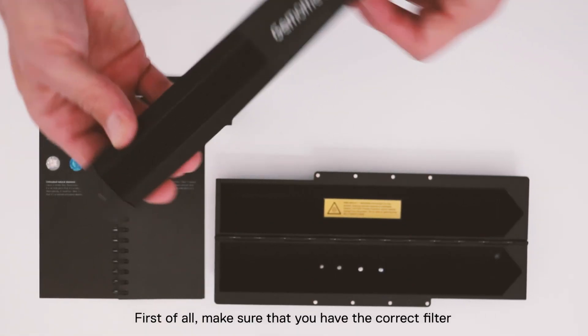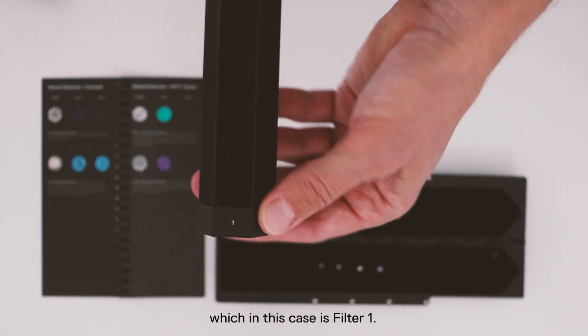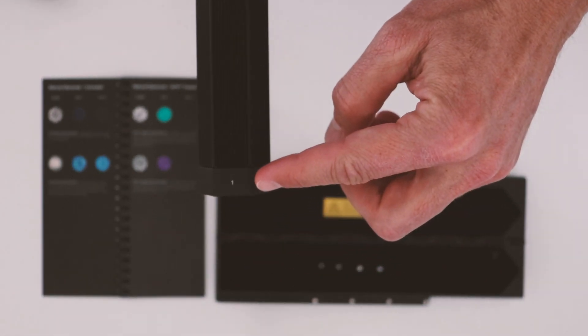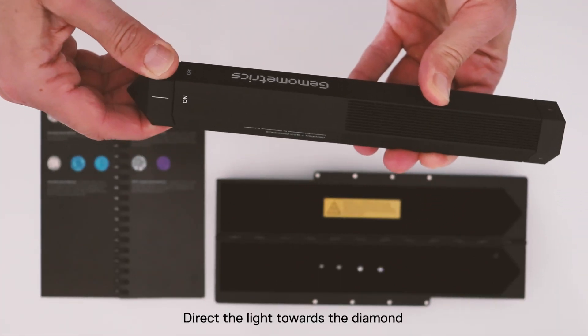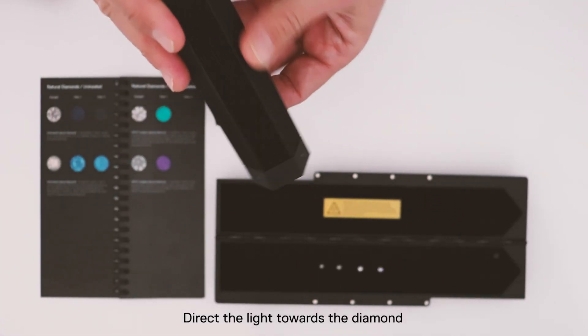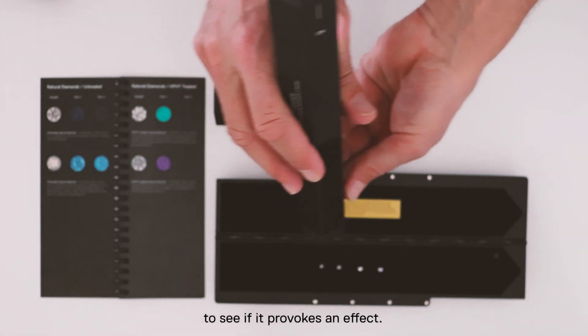First of all, make sure that you have the correct filter, which in this case is filter 1. Switch it on and direct the light towards the diamond to see if it provokes an effect.